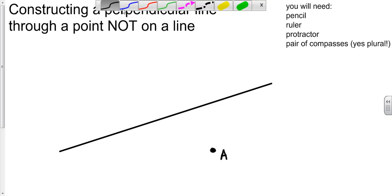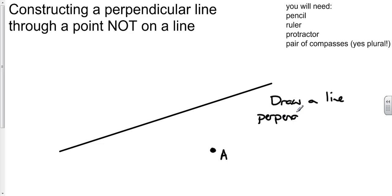So what we're going to need to do is draw a line perpendicular. We're going to have to give our line a name, we're going to call it PQ. Draw a line perpendicular to PQ that passes through A. So that's what we're going to try and achieve.